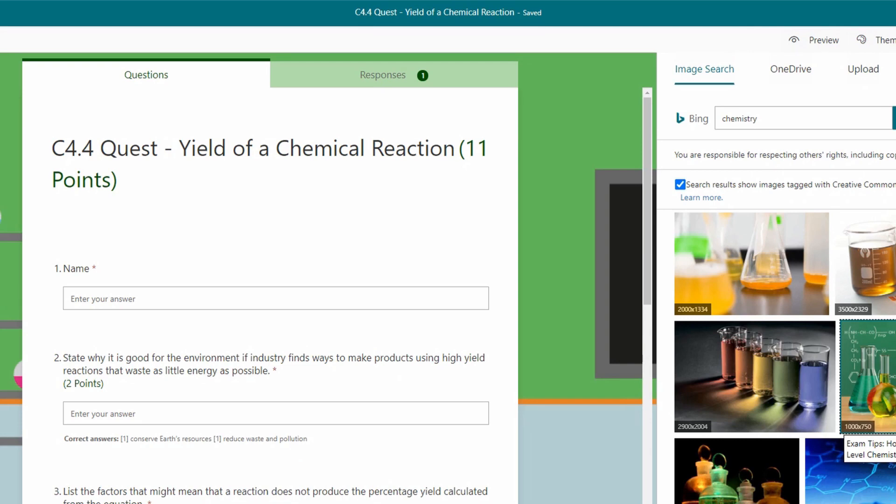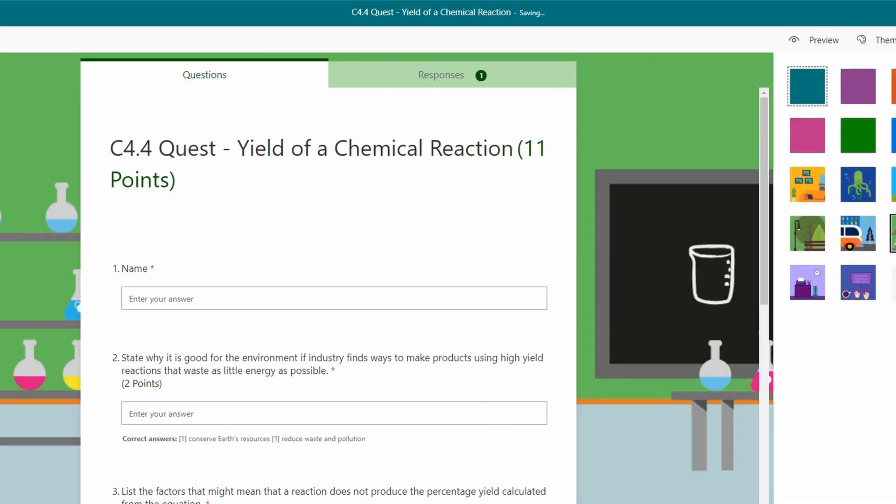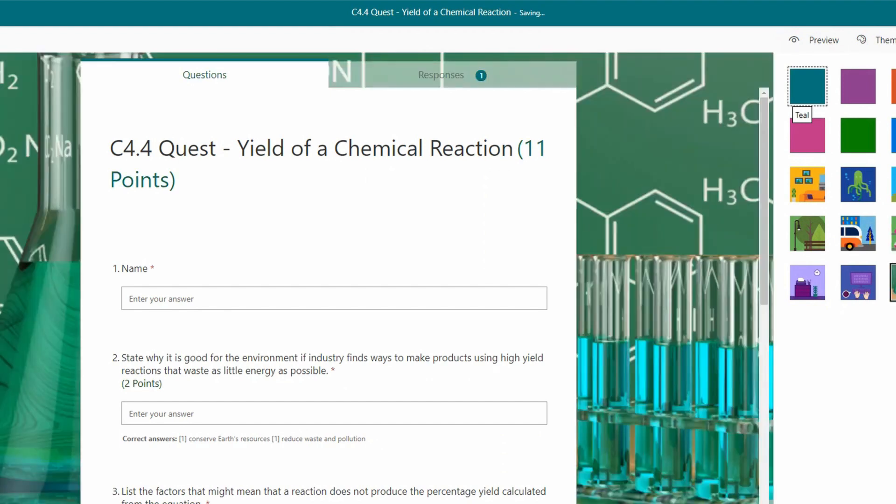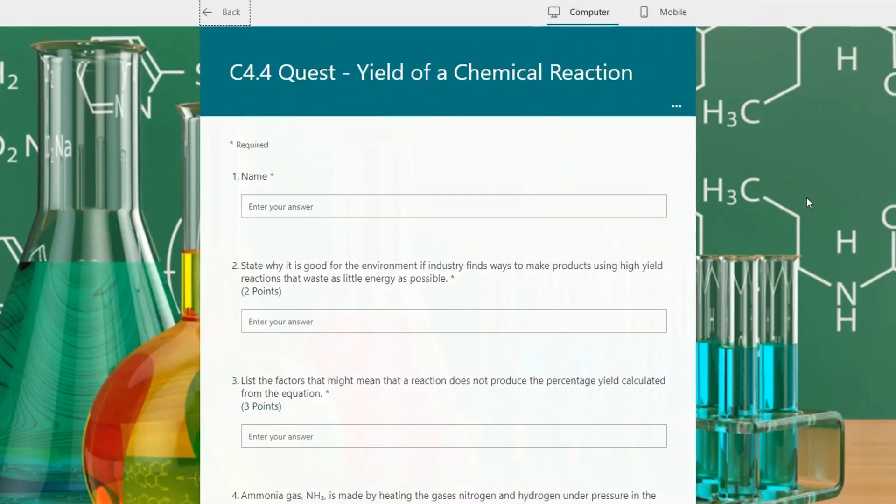So all you have to do is just click on the picture that you like. You can see the boxes tick there and then just add. And it will then upload that background to my form. And there we are. We have a nice background if we preview that. You can see now a background which is relevant to the topic.